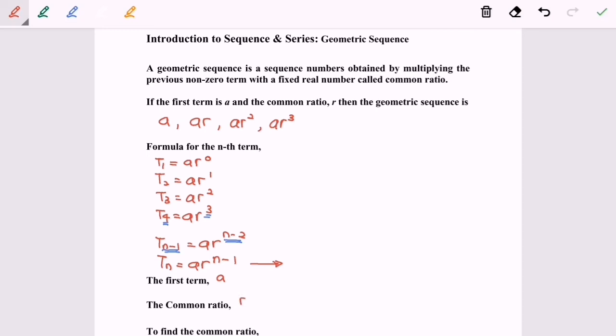To find the common ratio, the formula will be R is equal to Tn over Tn minus 1, or R is equal to Tn plus 1 over Tn. To be specific, R is equal to T2 over T1.